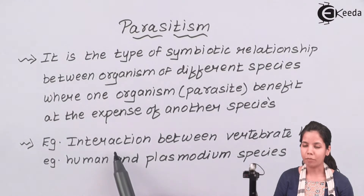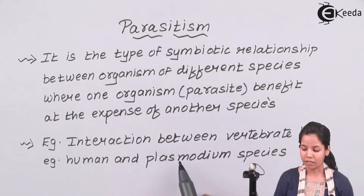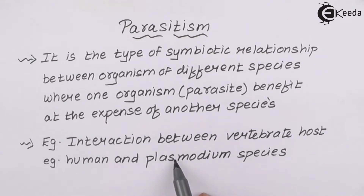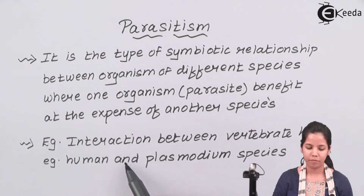In the animal kingdom, there are various examples of parasitism. Even Plasmodium vivax living in the intestine of human beings is an example of parasitism.